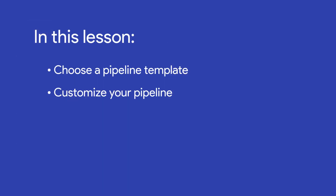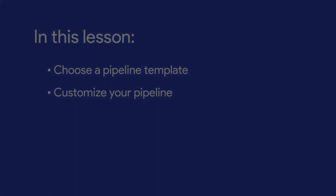In this lesson, we'll decide what we're tracking, then we'll set up the stages for each step of our process, and create columns to track all the details. By the end of this lesson, you'll be ready to fill in your pipeline with data.